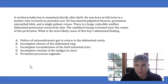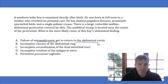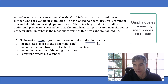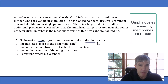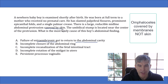Now let's look at the wrong answers. Choice A — failure of the extraembryonic gut to return to the abdominal cavity — is describing an omphalocele. In an omphalocele, abdominal contents like the intestines are outside the baby's body at birth. But the key thing to know is that in an omphalocele, the intestines are covered by a membrane, not covered by skin. When the defect is completely covered by skin, that's a hernia, not an omphalocele.